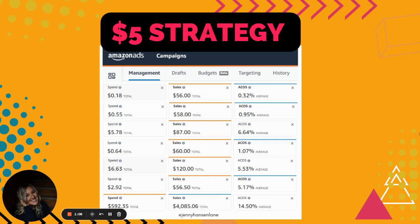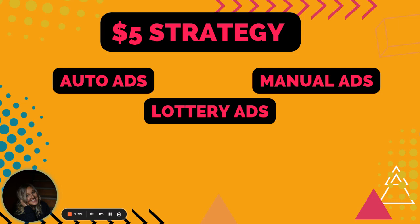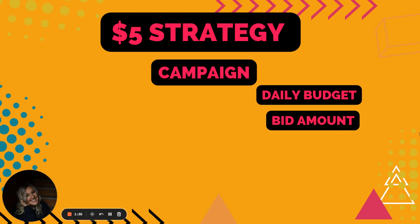Some of you have seen a really low ACOS from doing the $5 ad strategy. I don't like to turn on really high bids — I'm just not comfortable with it — but I will add to my daily budget; that's not something I'm afraid of. So I'm going to show you this ad strategy and how it begins. This is for automatic ads, this is for manual ads, and this is for lottery ads, which are just automatic ads with multiple books in them. I like to start my campaign daily budget at $5, and my bid amount I always start at two cents.